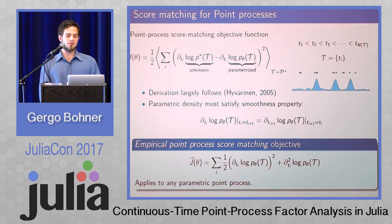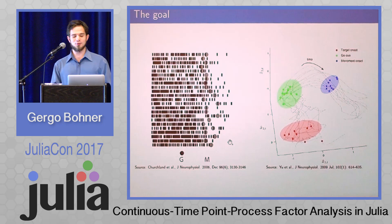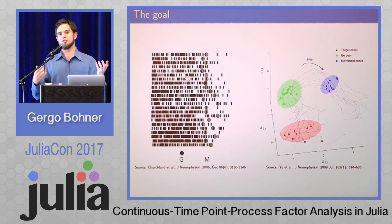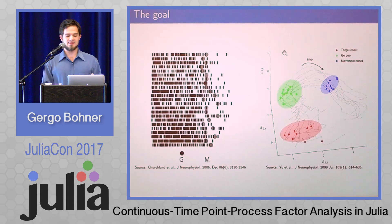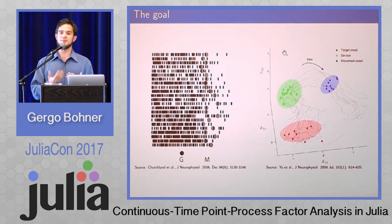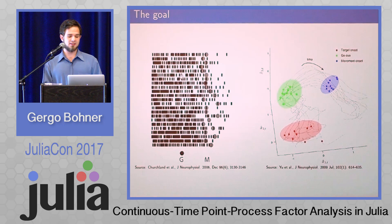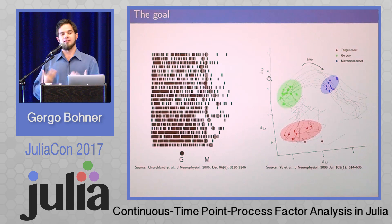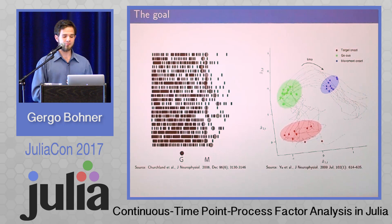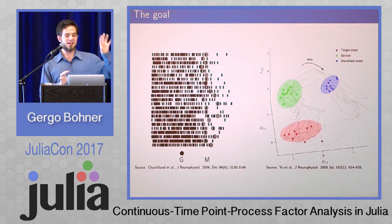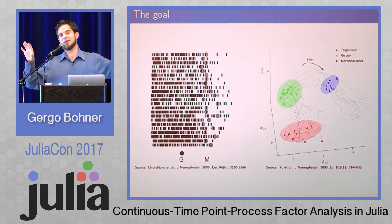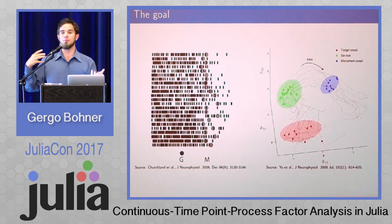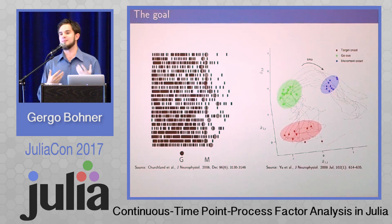Our goal is to go from the left side — a bunch of observed spikes — to the right side, which is a representation in a latent space. The left side is very noisy and you don't really know what's happening, whereas on the right side you can find structure in the data very easily across many many trials. This is essentially going from a very high-dimensional representation to a relatively low-dimensional representation, which gets rid of most of the noise internal to the neural spiking process.